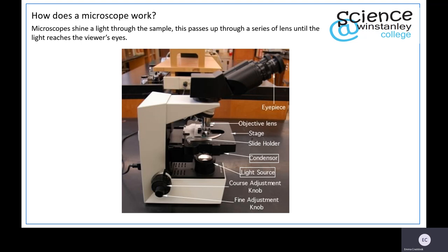Your sample or object is held on your stage by your slide holder, generally on a slide. The light passes through your condenser, through your sample and into your objective lens. The light then travels up where there is a mirror that bounces the light into the eyepiece lens, which is where you look through to see your object.